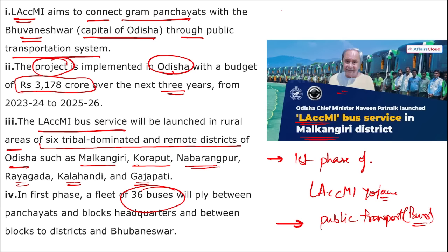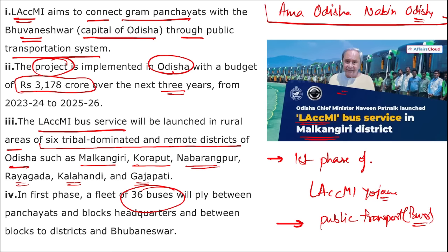Apart from this, Naveen Patnaik also launched 'Ama Odisha, Nabin Odisha.' This is basically to boost rural infrastructure and promote Jagannath culture across Odisha. Under this scheme, each Panchayat will receive 50 lakh rupees to take up projects for protecting places of worship, upgrading sites of historical significance, and improving rural infrastructure and digital access.